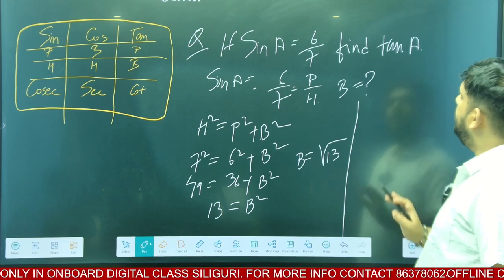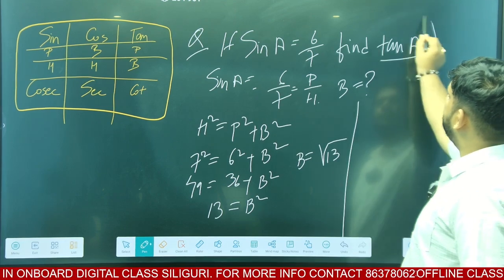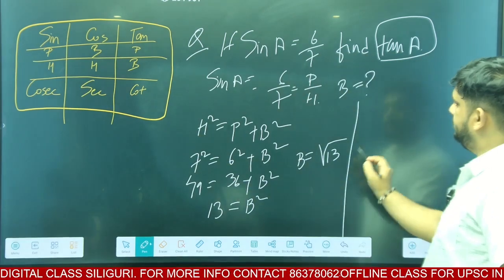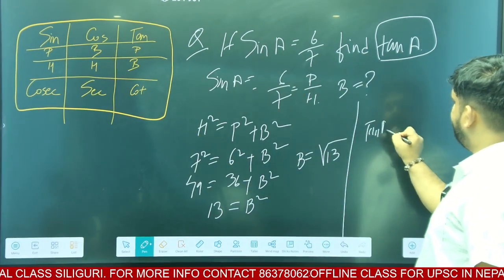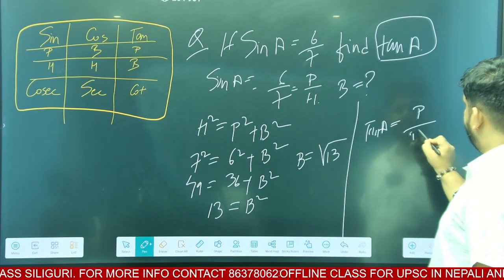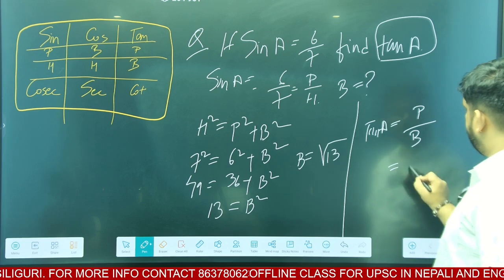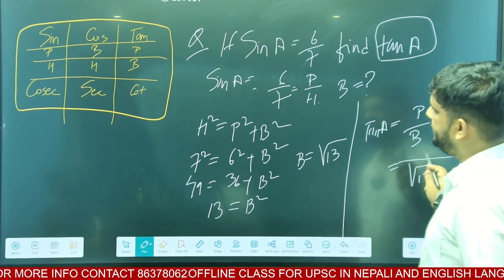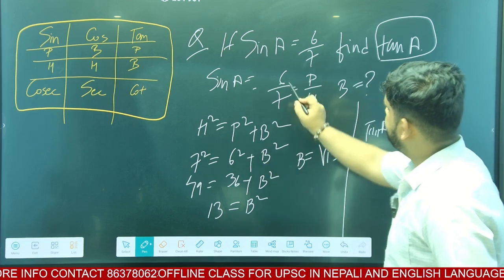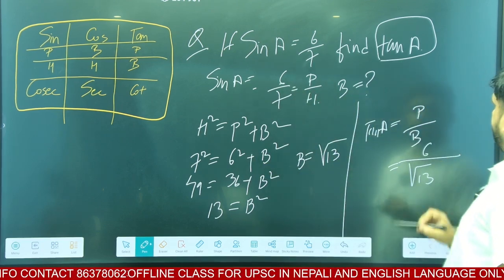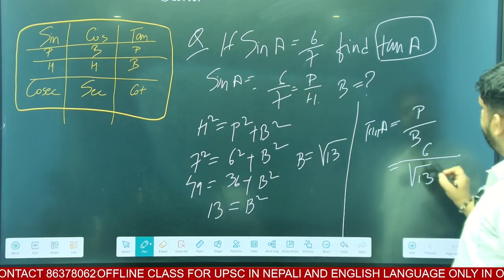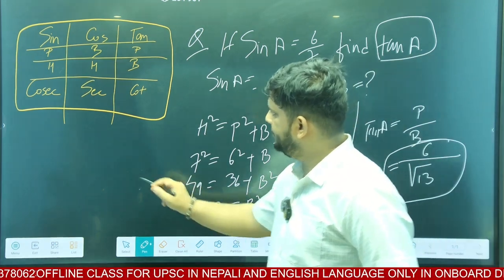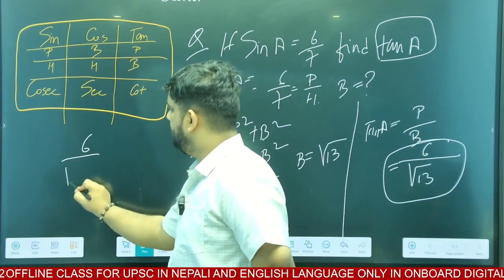Do you understand? Now what is tan A? Tan A is equal to perpendicular by base. Base is equal to root under 13. Perpendicular is equal to 6. So tan A equals 6 by root under 13. Please practice this. The value of 6 by root under 13 is the answer.